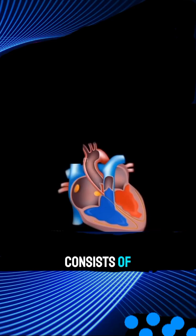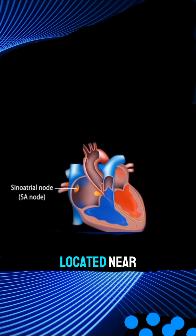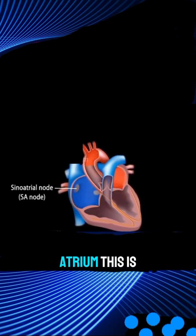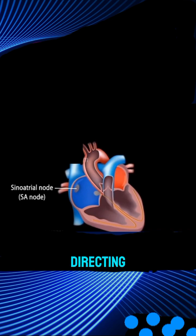The heart's conduction system consists of the following parts: the sinoatrial node or SA node, located near the junction of the entrance of the superior vena cava and the right atrium. This is the heart's natural pacemaker, directing the heartbeat and setting the heart rhythm.